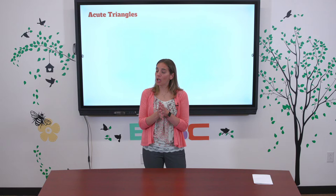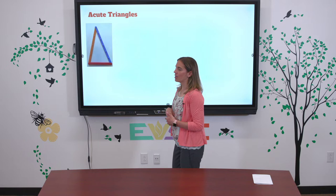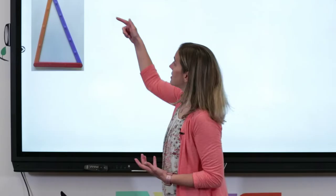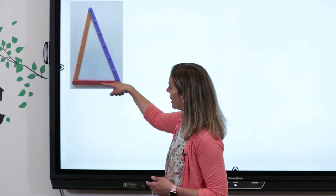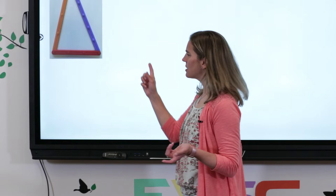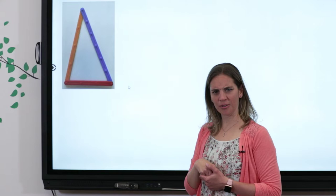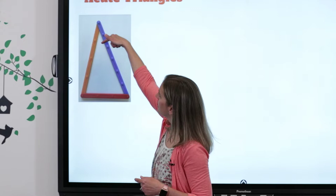Let's take a look at acute triangles. Acute is a type of angle, but it's also a type of triangle. I want you to think about the angles in this triangle — I see three angles: one at the top, one on the bottom left, and one on the bottom right. Look at this orange and red angle — it's an acute angle. The blue and red angle is also acute. And the angle up at the top is an even smaller angle, so that's definitely acute.